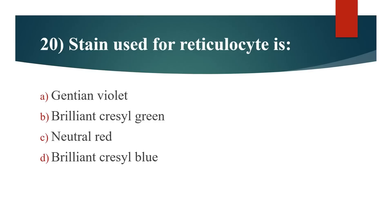20th question: Stain used for reticulocyte is? Option A: Junction violet. Option B: Brilliant cresyl green. Option C: Neutral red. Option D: Brilliant cresyl blue. Answer is Option D: Brilliant cresyl blue.